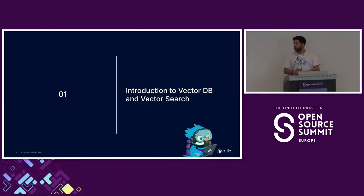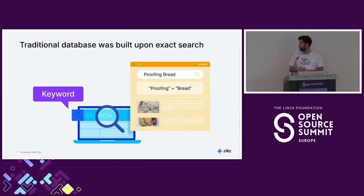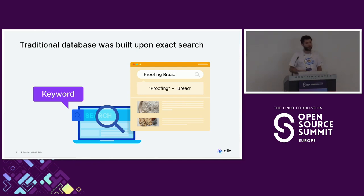Who here knows how vector databases work? So I'll give a quick intro so everyone can follow. Traditional databases are cool, but they're built on exact search — meaning if you do a select for a person in your table, if you have that person you get a result, but if you don't, you get nothing.